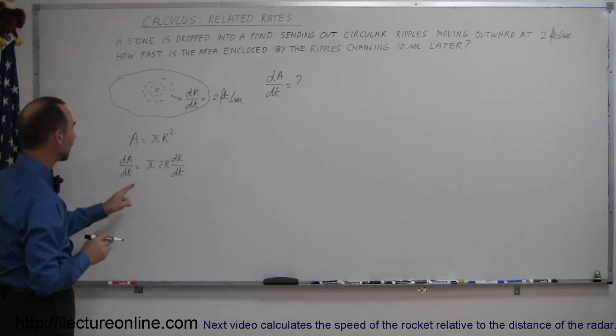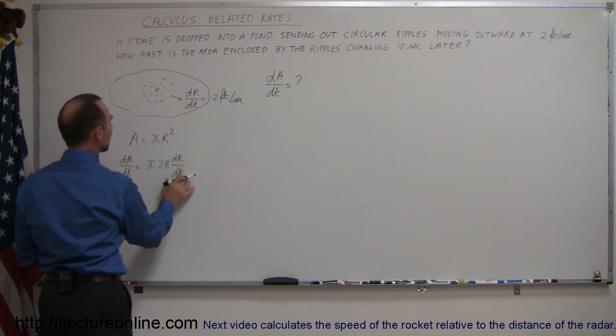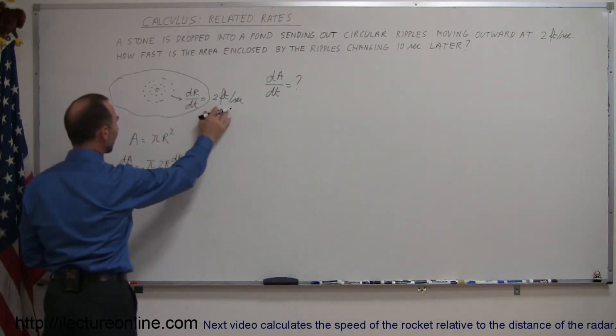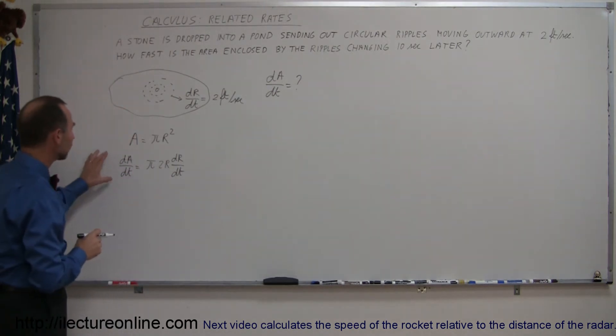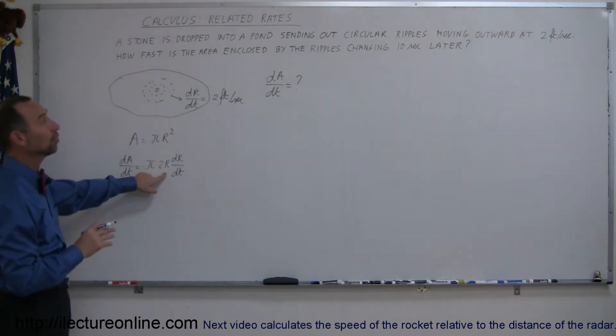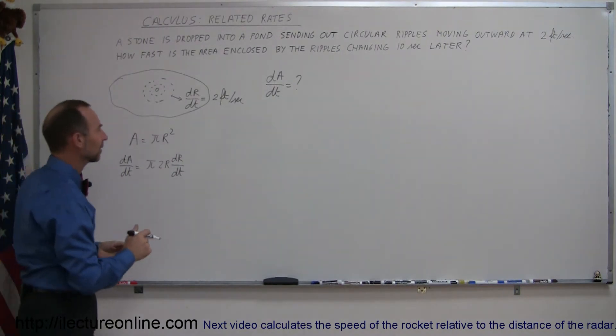Now we want to find out what dA/dt is, and we already have the equation in the right form. All we need to know is what dr/dt is, which is given as 2 feet per second, and what r is. They want to find the rate of change of the area with respect to time 10 seconds later, so we need to find out what r is 10 seconds later.